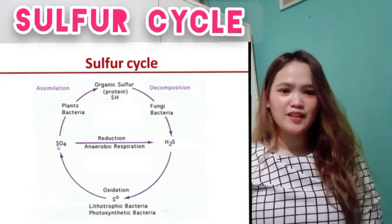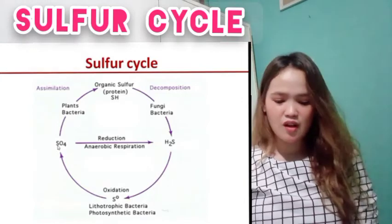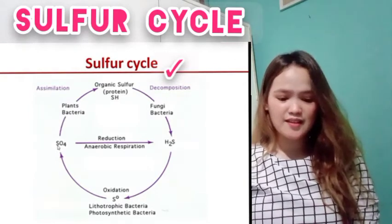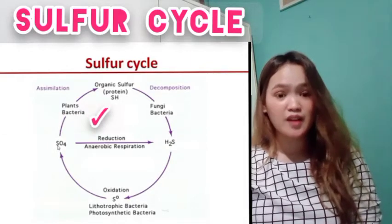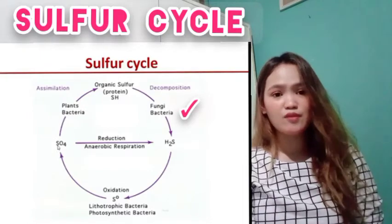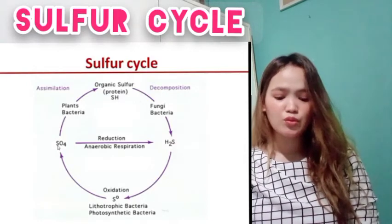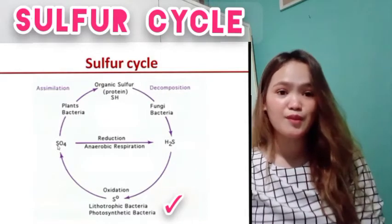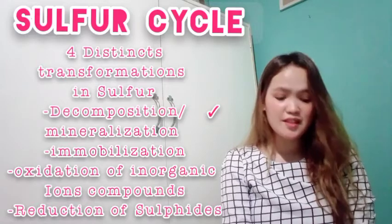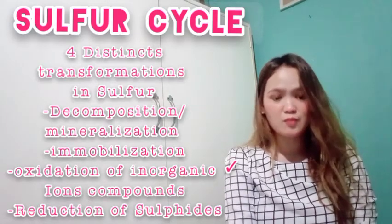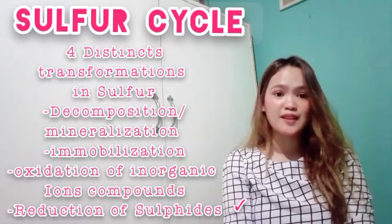Now let's look at the sulfur cycle. On one side we have assimilation and on the other side decomposition. Sulfur is oxidized to sulfate; plants and bacteria can take this sulfate form and convert it into an organic form. The sulfur compound can be decomposed by fungi and bacteria. Hydrogen sulfides can be further oxidized to sulfur by lithotrophic bacteria and photosynthetic bacteria — that's how the sulfur cycle works. There are four distinct transformations of sulfur: decomposition and mineralization, immobilization, oxidation of inorganic compounds such as sulfides and thiosulfates, and reduction of sulfides and sulfates.